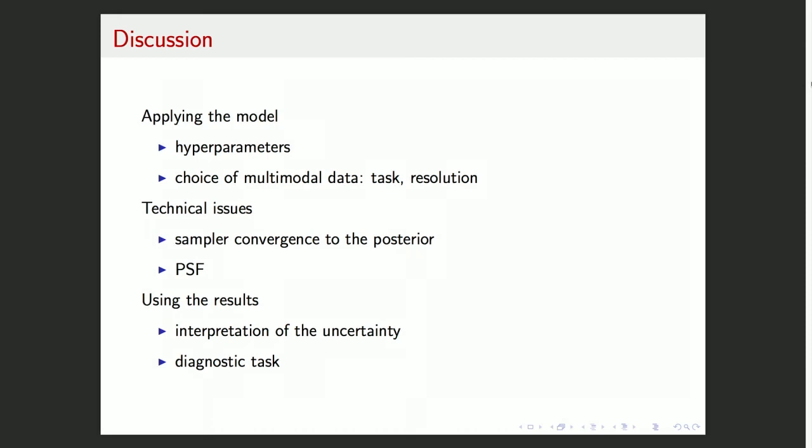We do have a couple of technical issues like making the sampler really draw samples that really match the posterior distribution that we want. That's what we call convergence. Also, we didn't include resolution modeling for PET. We should do that. It should probably improve the results as well.